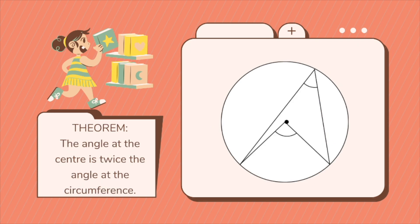The next theorem is that the angle at the center is twice the angle at your circumference. To prove this, let's say we have point X, and let's have this color-coded. Both angles on one side of your triangle are yellow, and the other side will be blue. Since you have radius here, radius here, and radius here, the two sides of your triangle are both equal in measure.